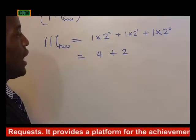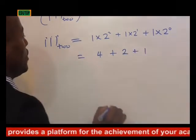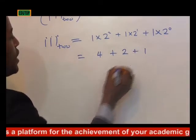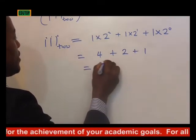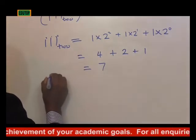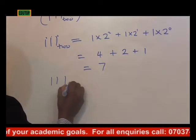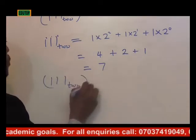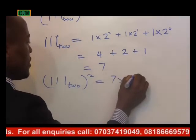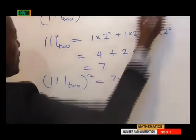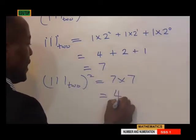2 raised to the power 0 is 1, times 1 is 1. 4 plus 3 is 6, plus 1 is 7. So what we are having here is 7. Now if we are having something like 1, 1, 1 in base 2 squared, this goes to 7 times 7 according to what we are having here. So that will give us 49.